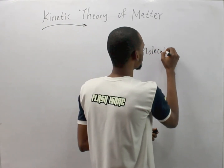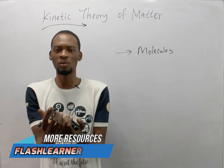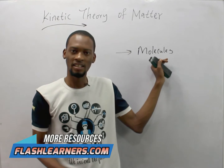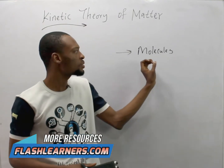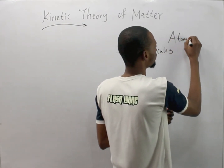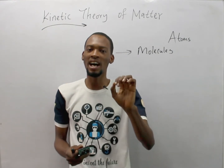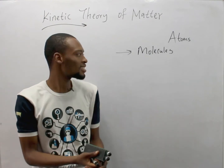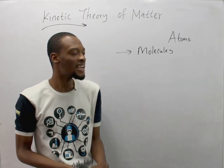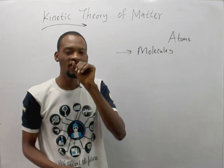First, it says that matter is made up of molecules. Molecules are very tiny particles that when they come together they make up matter. Molecules are made up of atoms, where an atom is the smallest particle of an element that can take place in a chemical reaction. Remember, substances can be pure or impure — pure substances are called elements, while impure substances can be mixtures or compounds.